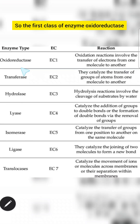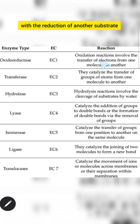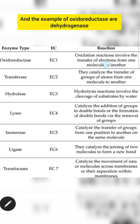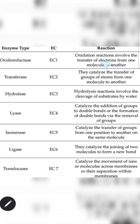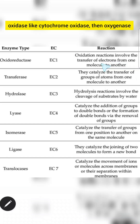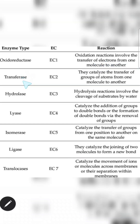The first class of enzyme, oxidoreductase, catalyzes the oxidation of one substrate with the reduction of another substrate. Examples of oxidoreductase are dehydrogenase like lactate dehydrogenase, oxidase like cytochrome oxidase, then oxygenase, peroxidase, and catalase.